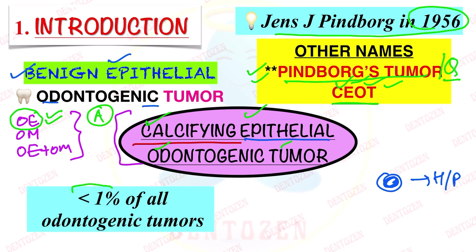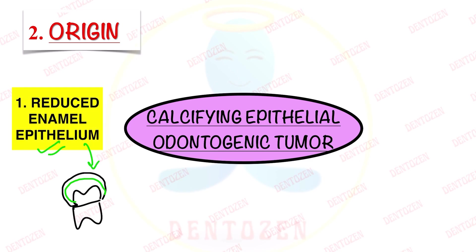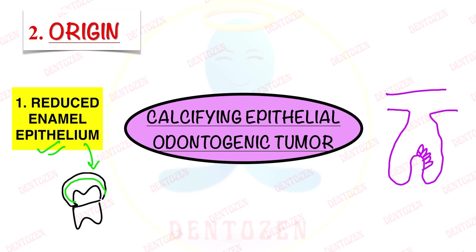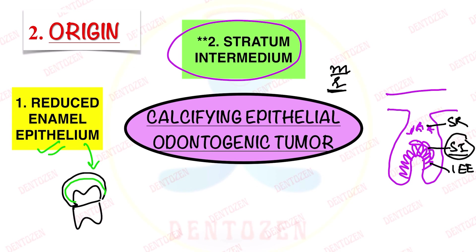This tumor comprises less than 1% of all odontogenic tumors. Most cases are seen in association with unerupted or impacted teeth. Pindborg originally suggested this tumor may arise from reduced enamel epithelium, but today it is believed it arises from a layer inside the enamel organ present between the inner enamel epithelial cells and the stellate reticulum cells — this layer of flat cells is known as stratum intermedium. This is an important exam question, as the tumor cells morphologically resemble the cells of the stratum intermedium layer.